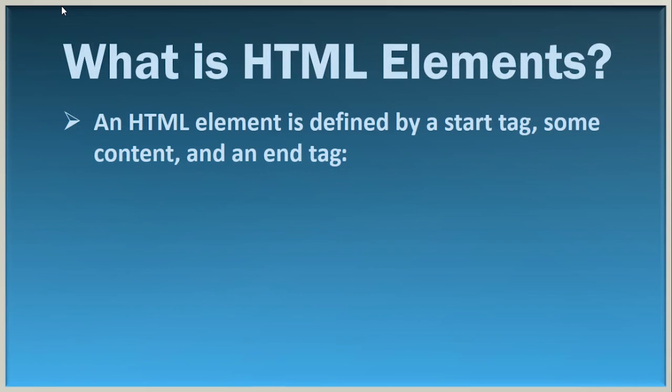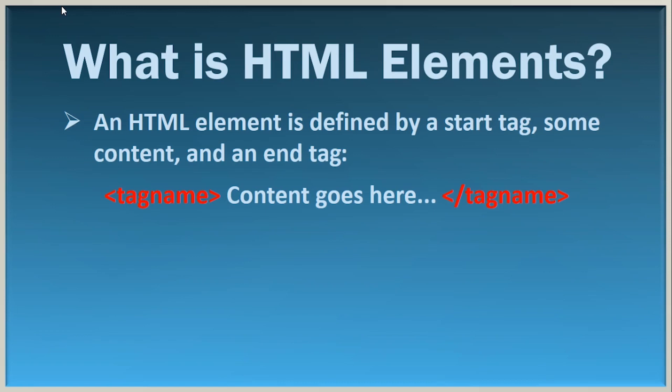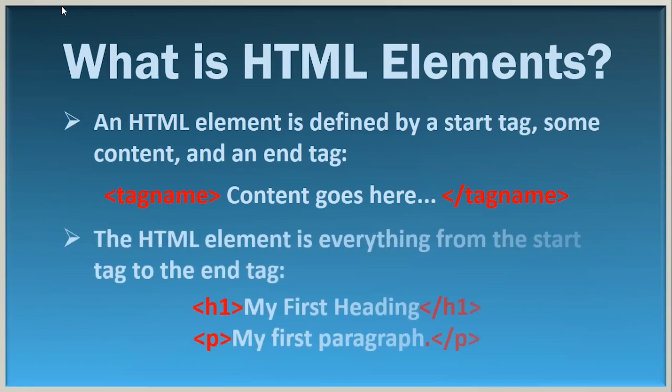So what are the HTML elements? An HTML element is defined by a starting tag, some content, and then an ending tag. Here is an example of HTML elements — we start from the starting tag, then the content, and in the last we use the ending tag. The HTML element is everything from the starting tag to the ending tag.